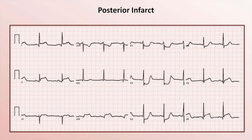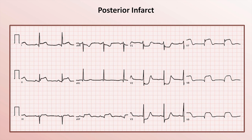Here is an EKG of a patient experiencing an inferior STEMI. You can also note the ST elevations in leads 1, V5, and V6, indicative of a larger inferior lateral STEMI. Inferior lateral STEMIs frequently also involve the posterior wall, which is already suggested by the horizontal ST depressions in V1 and V2. Here V4 through V6 are replaced by V7 through V9, and the very prominent ST elevations seen here are confirmation of posterior wall involvement.